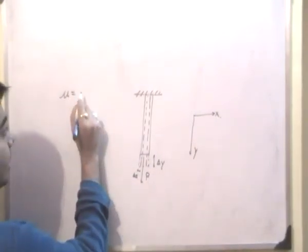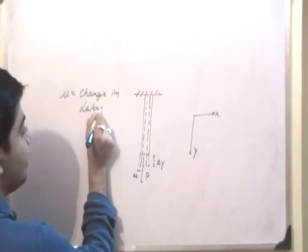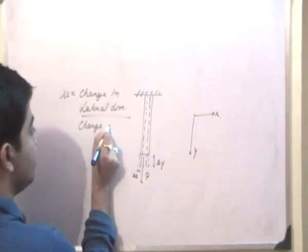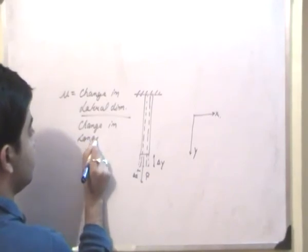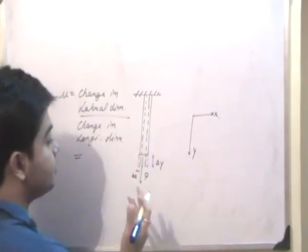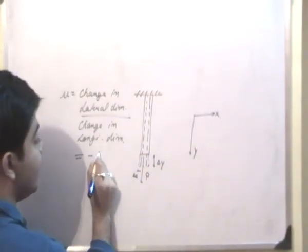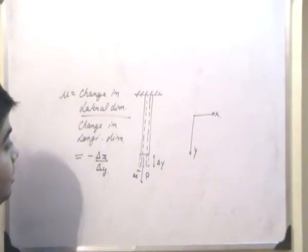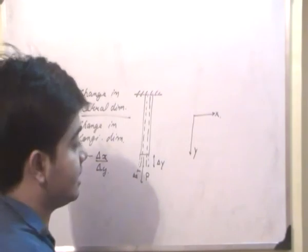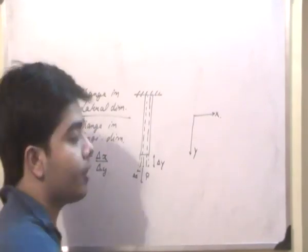So Poisson's ratio is equal to the change in lateral dimension—the lateral dimension being the x direction—divided by the change in longitudinal dimension, that is δy. So essentially, both of these will have different signs, because if δy is axial elongation, then δx will be axial compression. So it's -δx/δy. Now it's very evident from this figure that the value of Poisson's ratio will, in most cases, be less than 1.